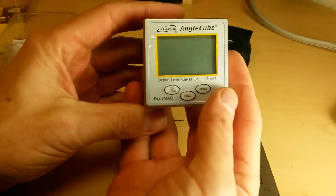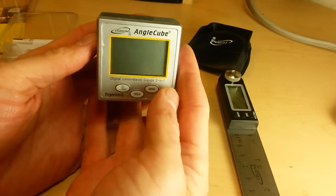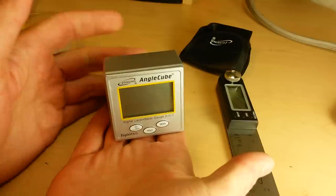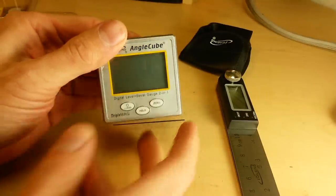It's got magnets on three different sides, so you can stick it to a bandsaw blade, stick it to a table saw blade, stick it to a fence post, you can actually stick it to a metal straight edge and turn a metal straight edge into a digital level.